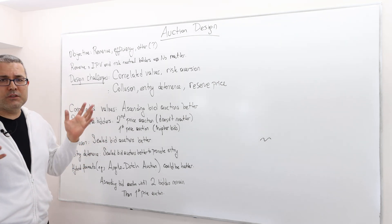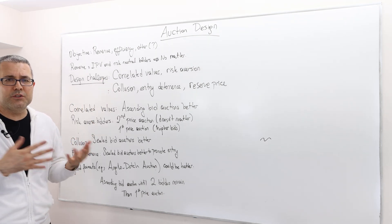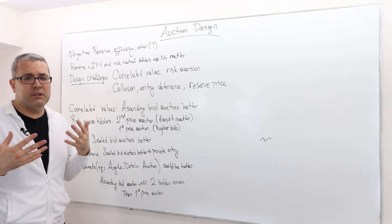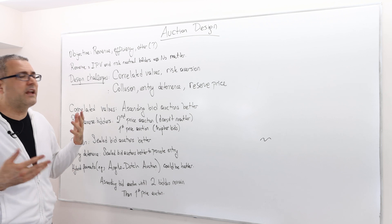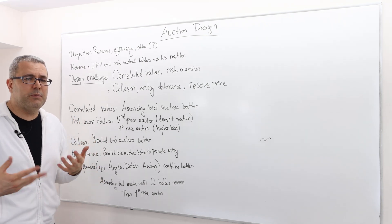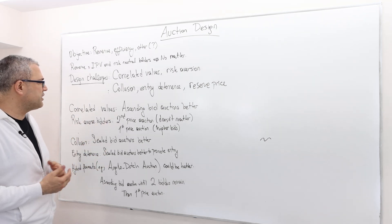There's also a bunch of other design challenges. For example, correlated values and risk aversion are some of them. Collusion is when bidders actually collude. Entry deterrence - some auction formats do not really incentivize bidders to enter. And reserve price. So these are some of the challenges.